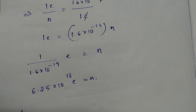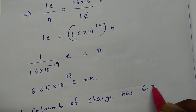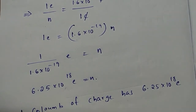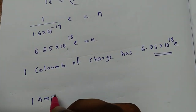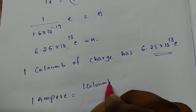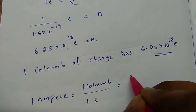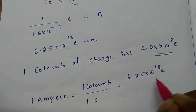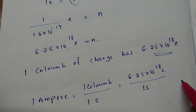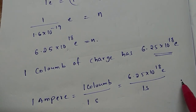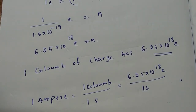Meaning: 1 coulomb of charge has 6.25 × 10¹⁸ electrons. Now think about current — 1 ampere indicates 1 coulomb of charge per 1 second, meaning 6.25 × 10¹⁸ electrons have to cross a point in 1 second. If you take 1 point, that many electrons — 6.25 × 10¹⁸ — have to cross that point in 1 second, and if that happens, we can say the current is 1 ampere. Think about that many electrons that have to flow. Thank you.